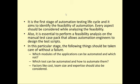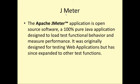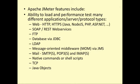JMeter is one automated testing tool which is a 100% pure Java application designed to test the load and performance of web applications. It was originally designed for testing web applications but has since been expanded. JMeter is the Apache JMeter application software for software testing, and it supports different applications, server protocols, and protocol types.